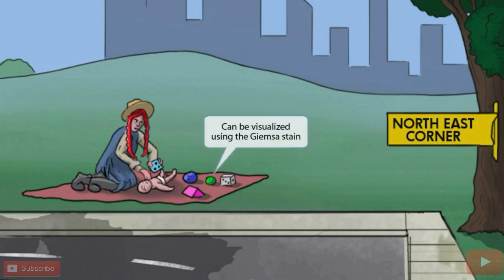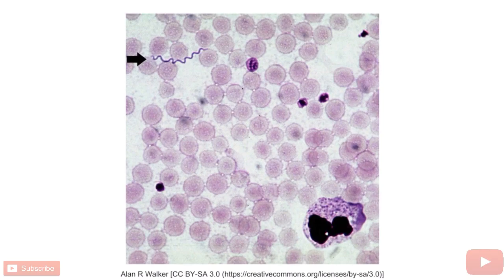Notice that we've also shown Anne trying to entertain the baby with some games. Games sounds like Giemsa, so we've included this here to help you remember that Borrelia can be visualized using the Giemsa stain. This is a stain that uses aniline dyes and is very similar to another stain called the Wright stain. This is an image of a Giemsa stain of Borrelia, and as you can see, the organism is shown right here.